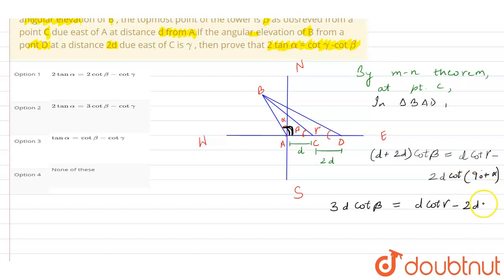Cot 90 plus theta equals tan theta only. After this, we will be taking D common from these terms, so it will get cancelled. So we will be left with 3 cot beta equals cot gamma minus 2 tan alpha.